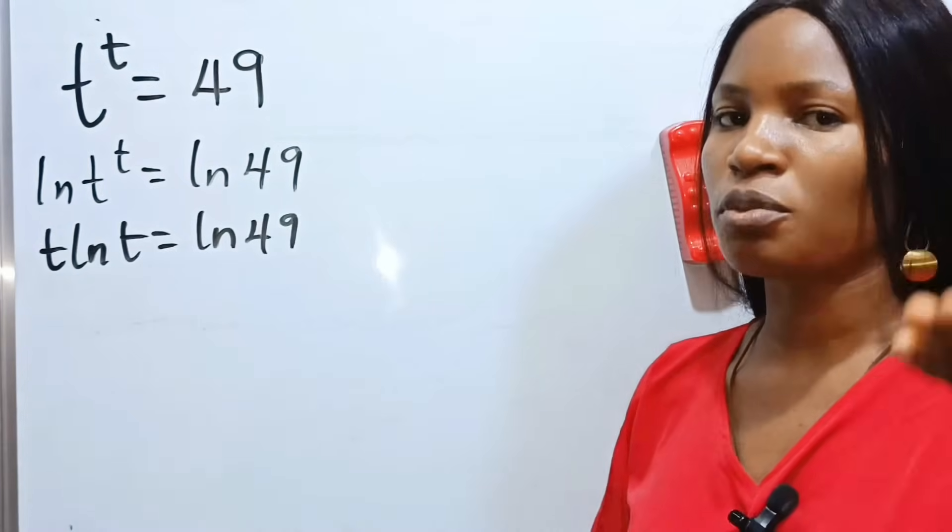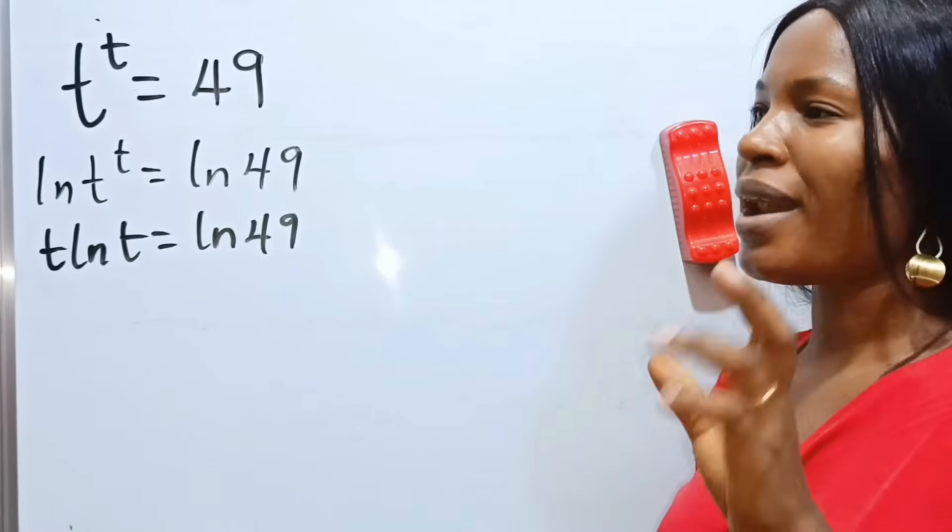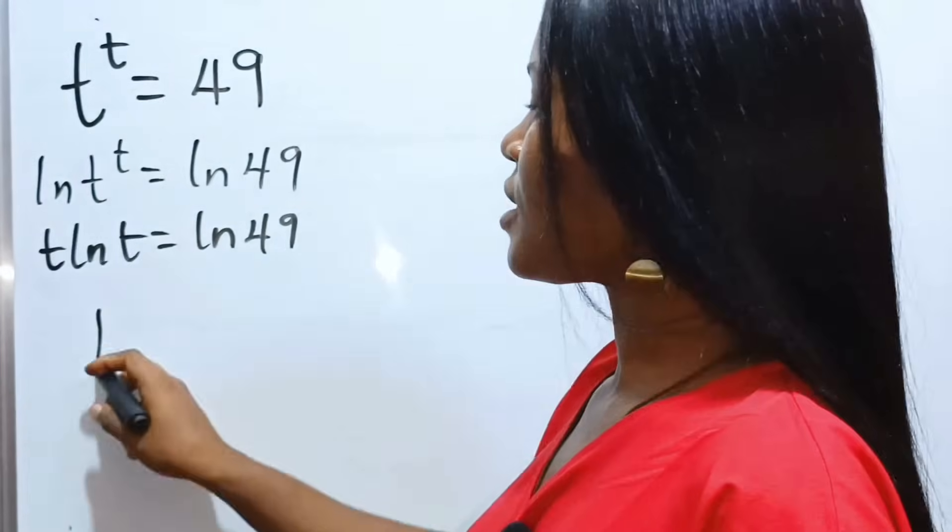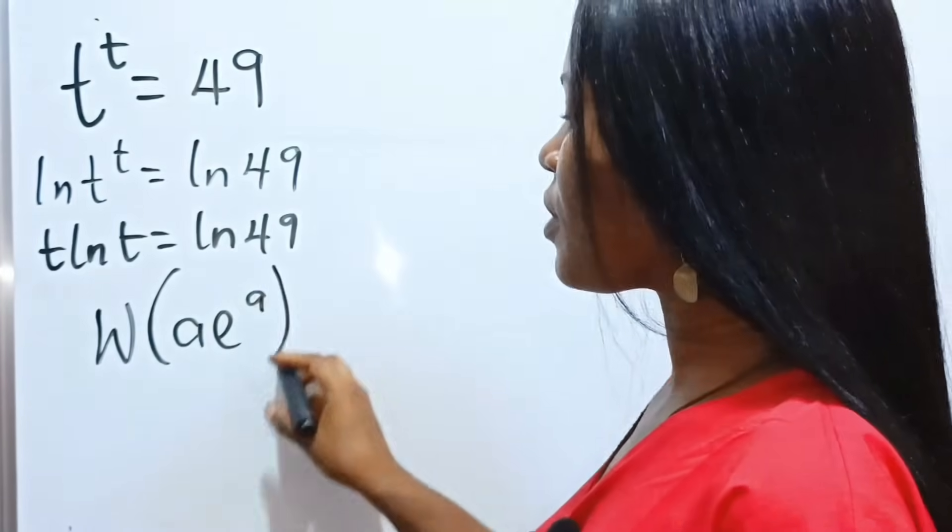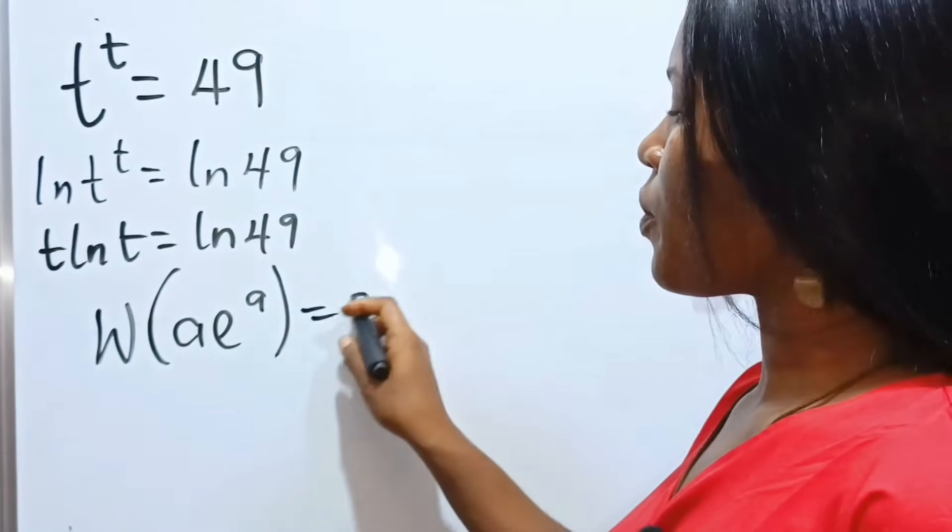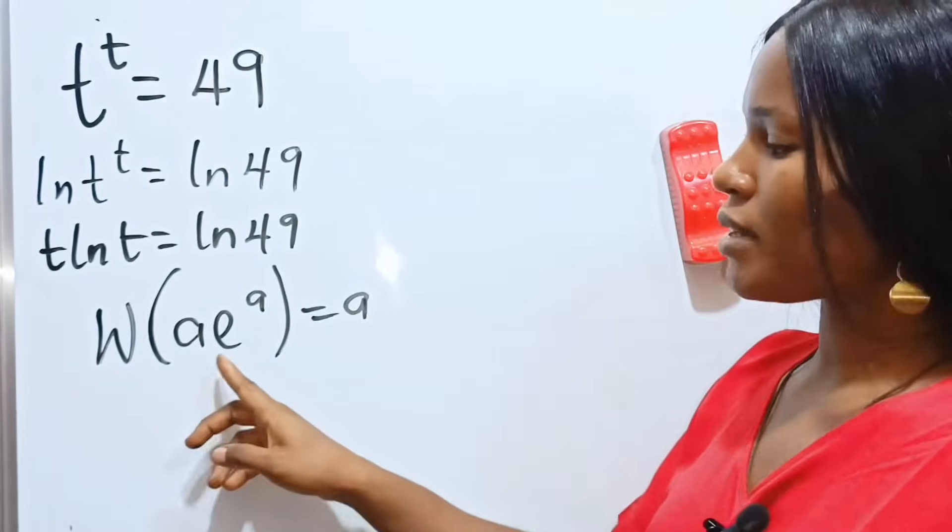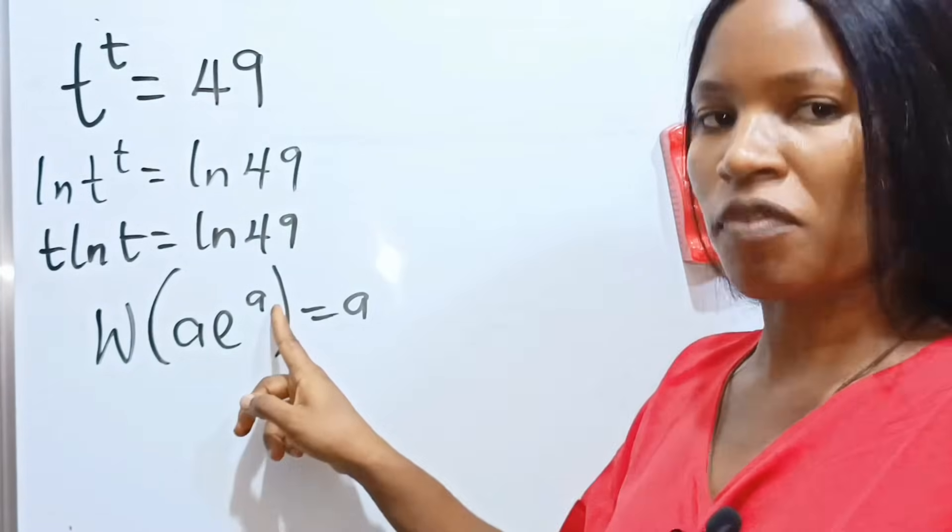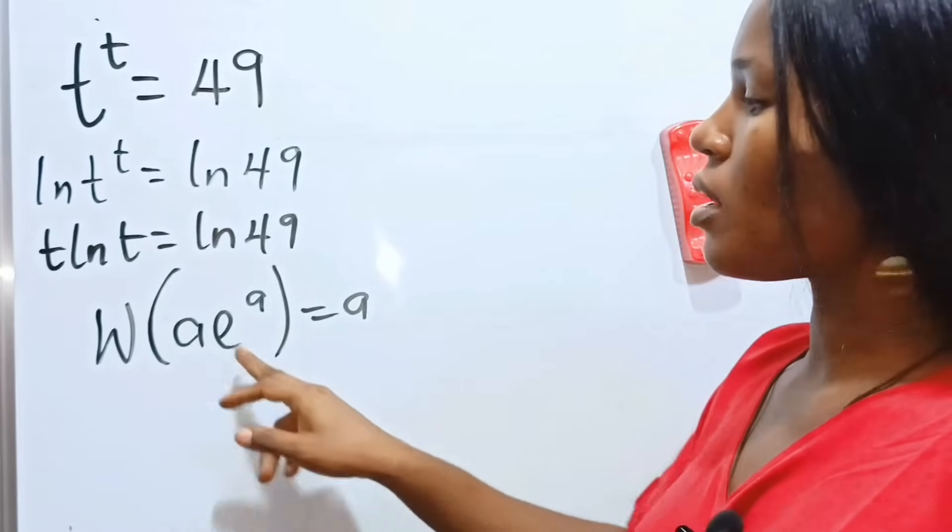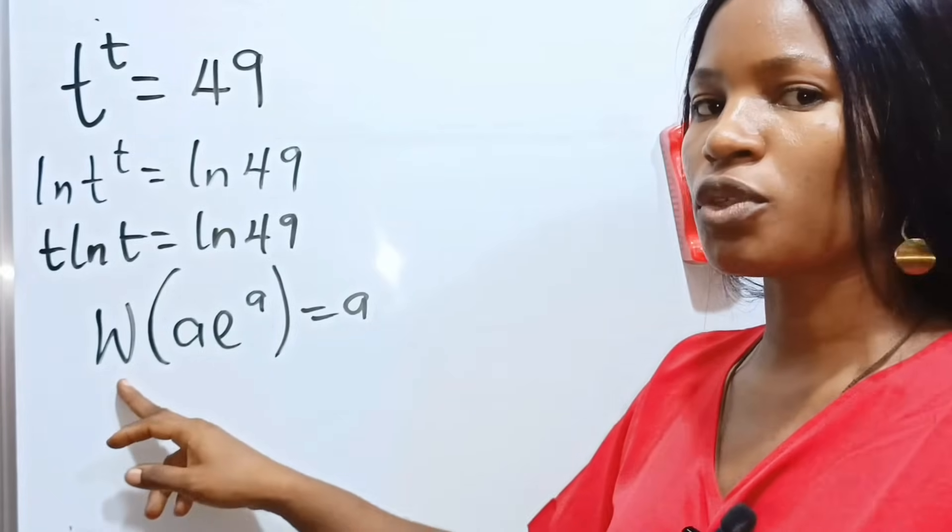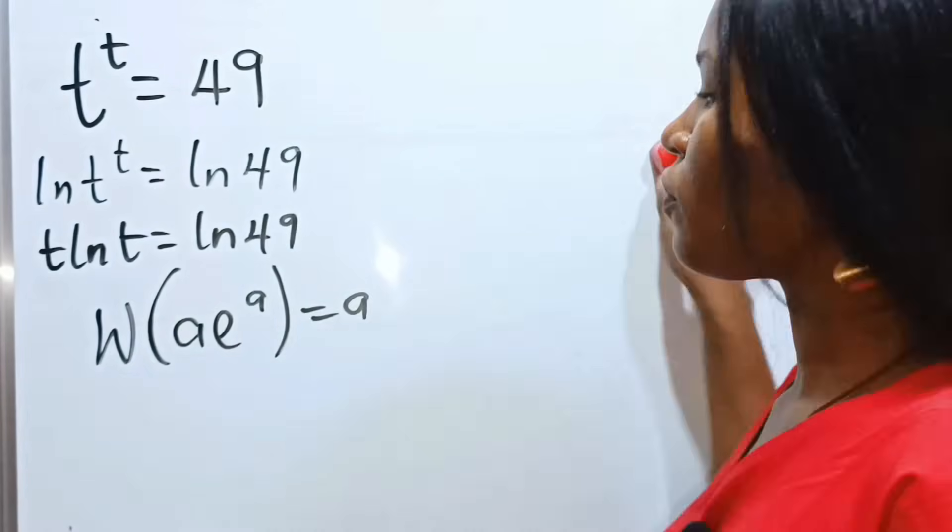Now, I made mention of the Lambert W function. Remember that the Lambert W function says that when you apply the Lambert W function to a term in this form, the answer will give you a, so what you have as coefficients of e should be the power of e as well. Now, let's manipulate this to look like this, so that we can introduce a Lambert W function to get the value of t.